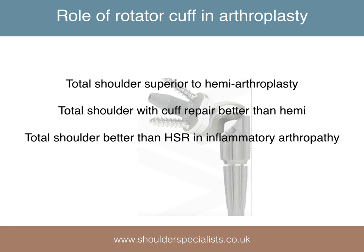However, we know that in a rotator cuff deficient shoulder, rapid glenoid component loosening is a genuine problem, and thus hemiarthroplasties have often been used in the arthritic cuff deficient shoulder.